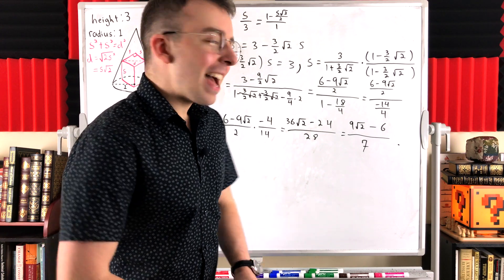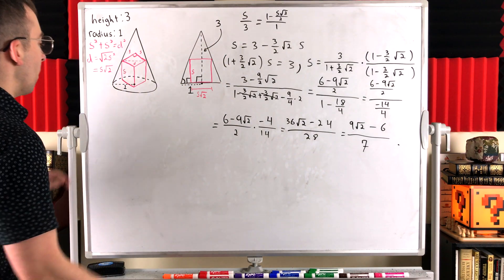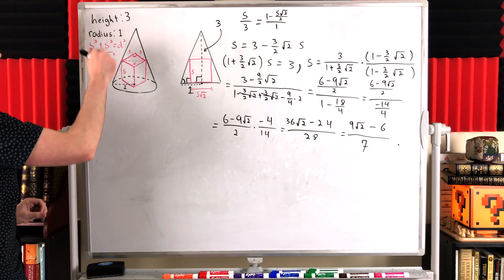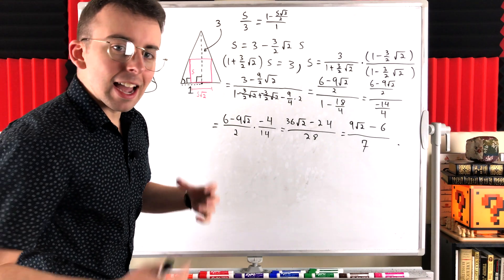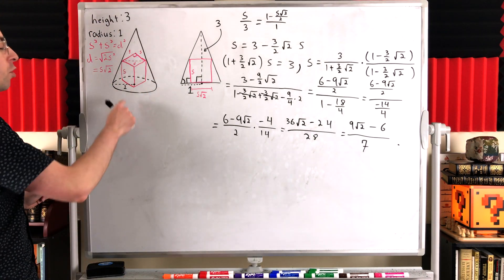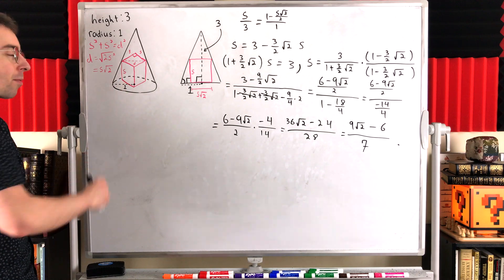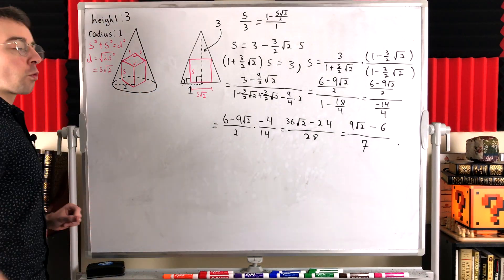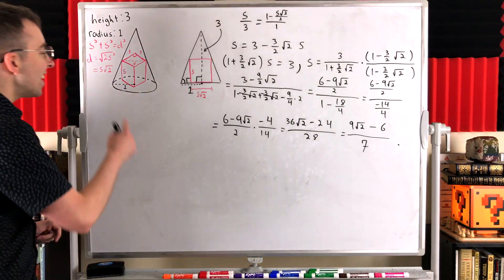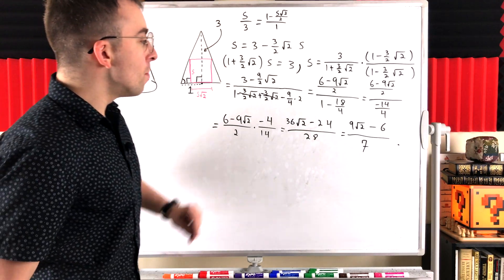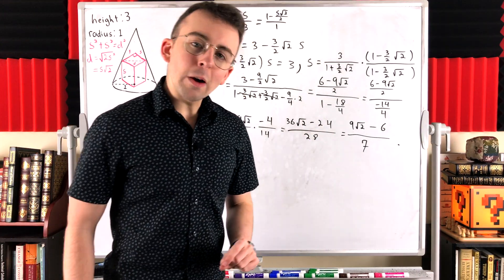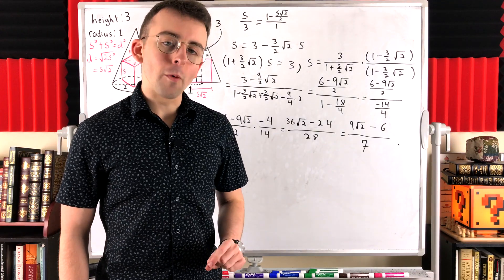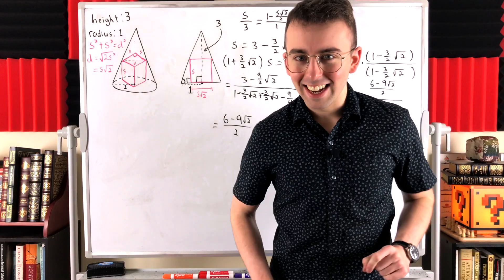So if we have a right circular cone with a base radius of 1 and a height of 3, and we've got an inscribed cube whose bottom face lies entirely within the circular base of the cone, then the side length of that cube is (9√2 − 6) over 7. And that's it.